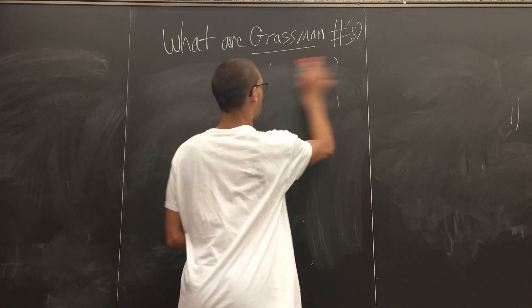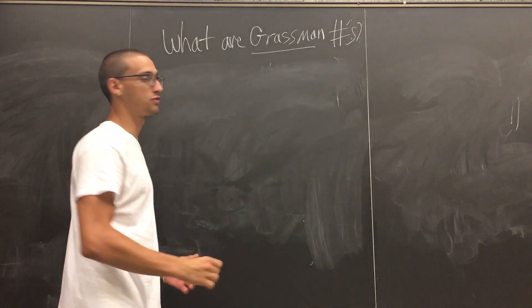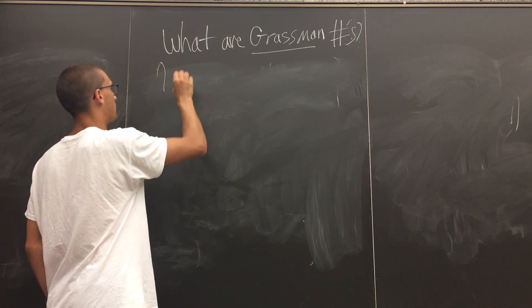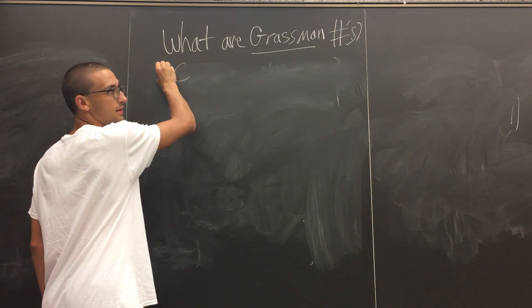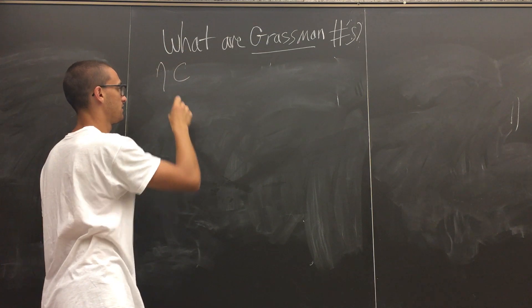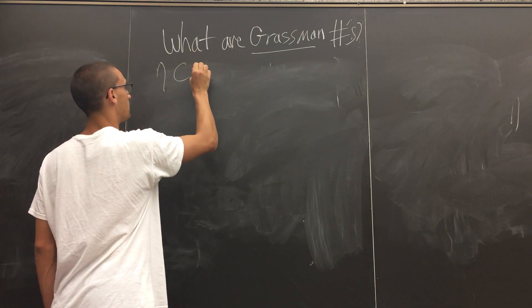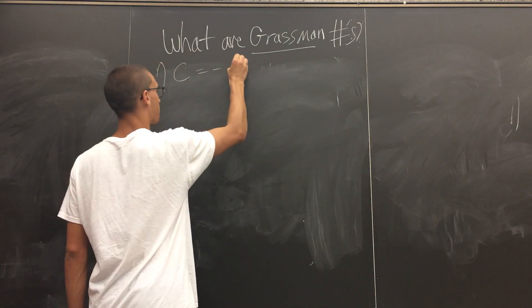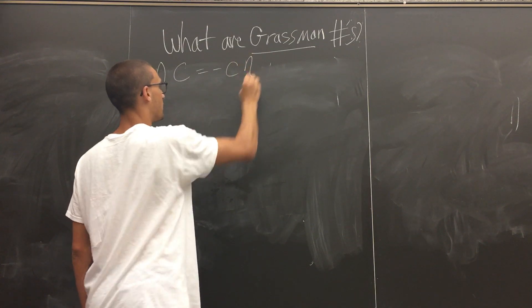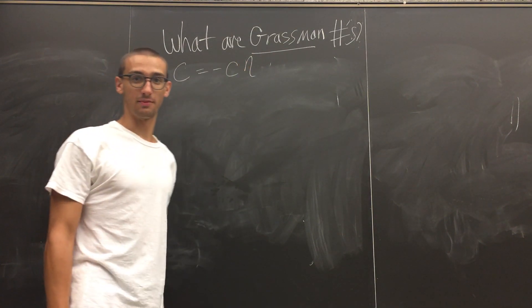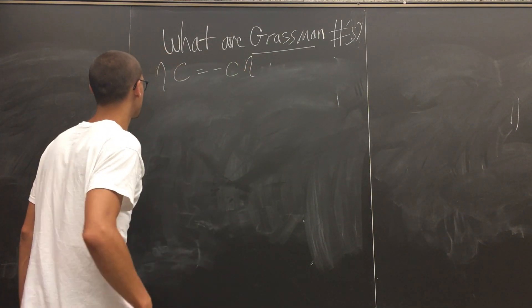We're going to say two Grassman numbers, let's just say these two, maybe one fermion and two fermions, the first fermion and the second fermion. If we swap them, they have to anti-commute, they pick up a minus sign. So now we could do some cool things.